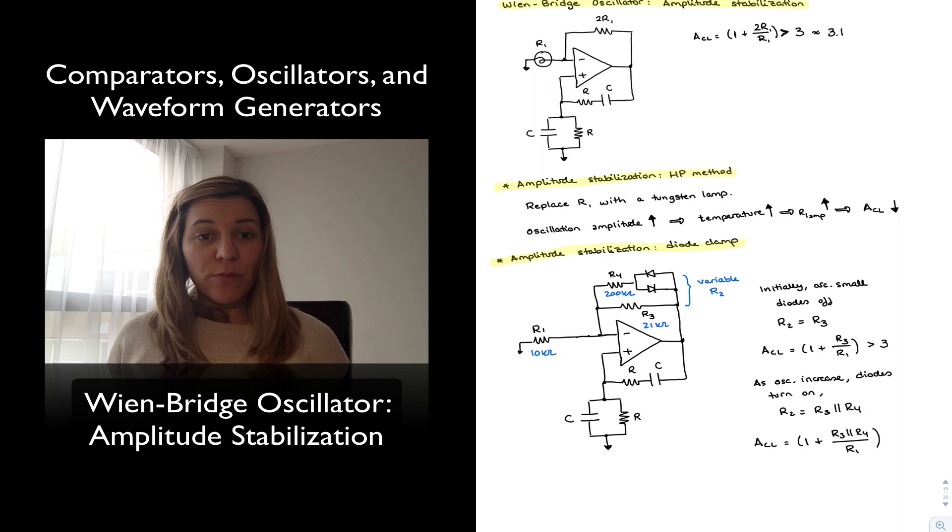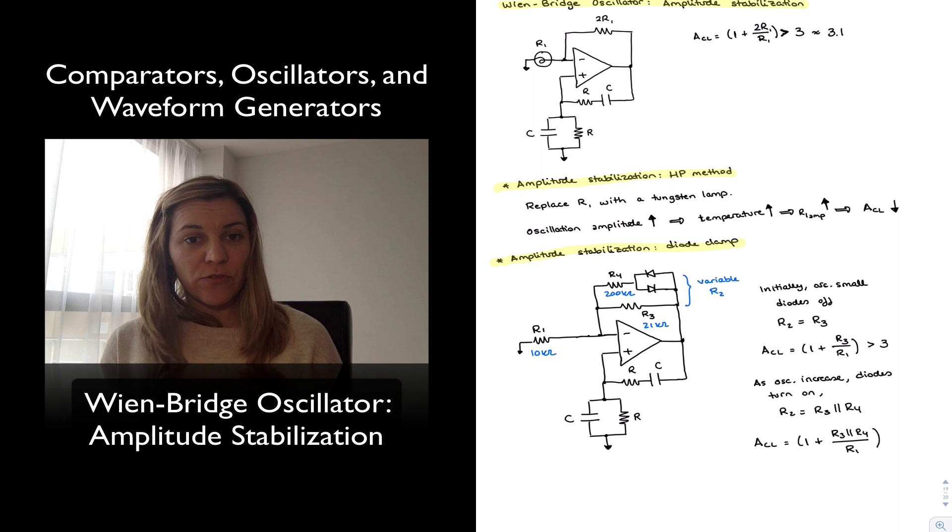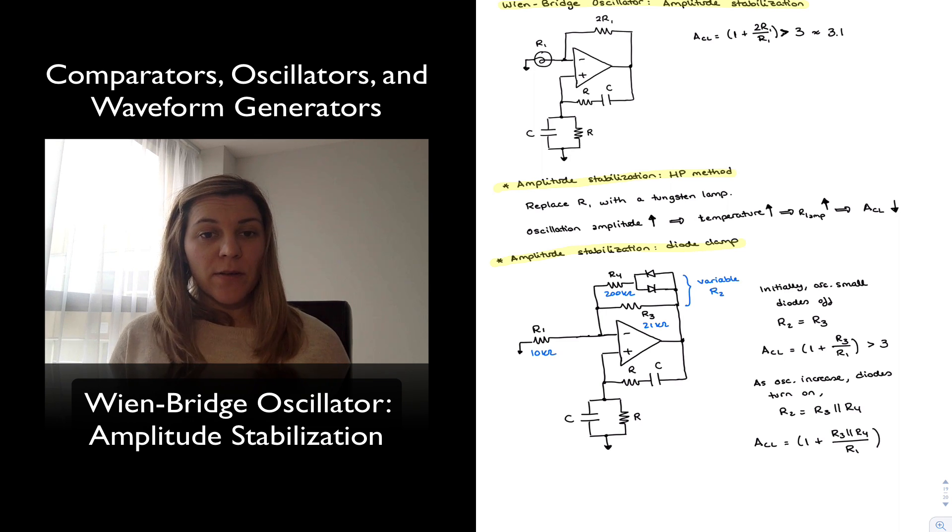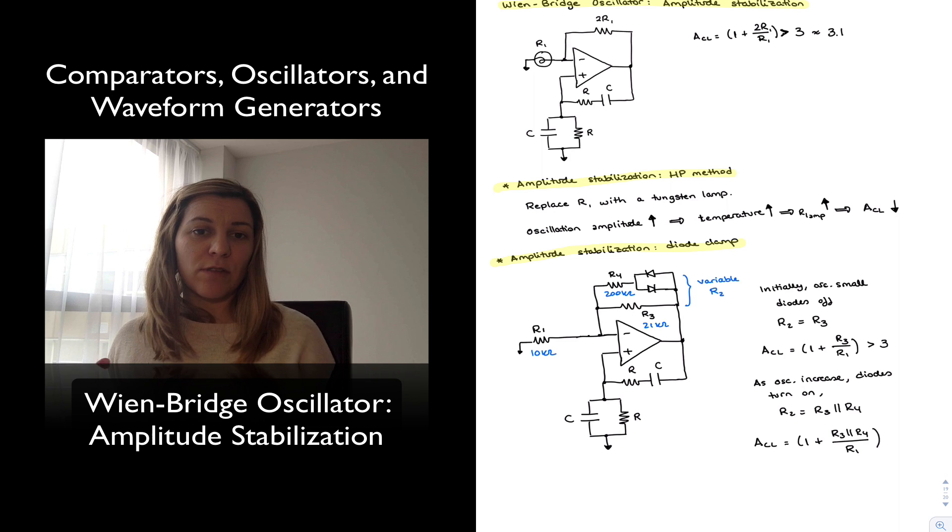Notice that in both methods we start with a circuit with a gain slightly greater than 3, so that we get that oscillation started. And we use some sort of negative feedback mechanism so that as soon as that gain tries to exceed a value of 3, the feedback mechanism kicks in and it keeps the gain stable at a value of 3.